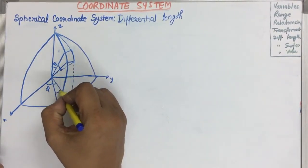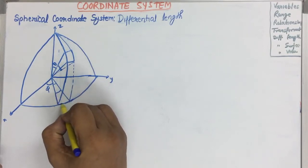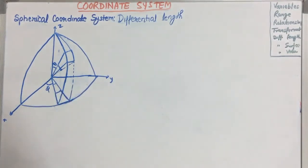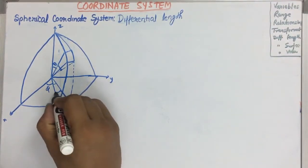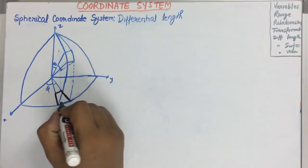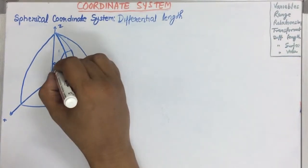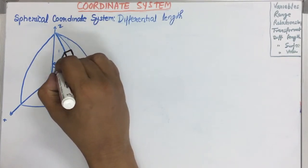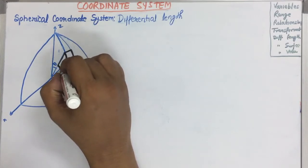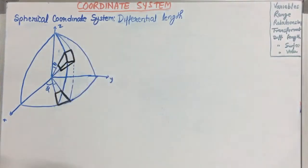Projection of this will be here. The marker is not working properly, so I am unable to draw it clearly. This is the differential object for which we are interested to find the differential length, surface and volume.